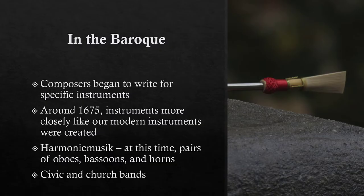Starting in the Baroque era, this was the time when composers started actually writing for specific instruments. If you remember back to the Renaissance era, composers didn't specify what instrument would play what part. So even though we have music that's predecessors to band music, it's like maybe you play it on recorder, maybe you play it on shawm — no one really cared. Around 1675, instruments started to be built that looked a lot more like the modern instruments we have today, and that's why we can play music from the Baroque era on our modern instruments.